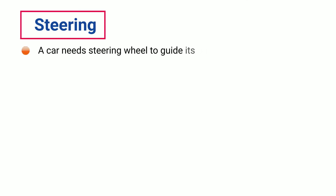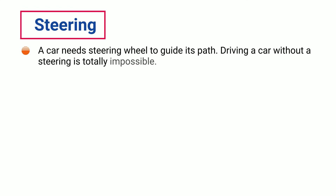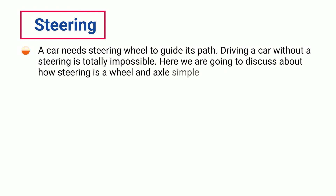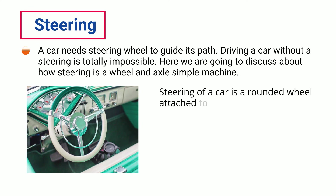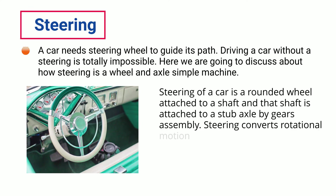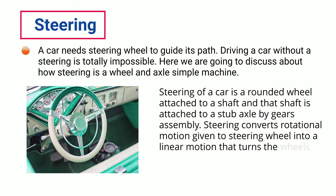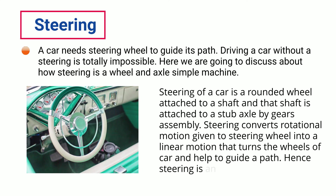Steering. A car needs a steering wheel to guide its path — driving a car without a steering wheel is totally impossible. The steering of a car is a rounded wheel attached to a shaft, and that shaft is attached to a stub axle by a gears assembly. Steering converts rotational motion given to the steering wheel into linear motion that turns the wheels of the car and helps to guide its path. Hence, steering is an example of a wheel and axle machine.